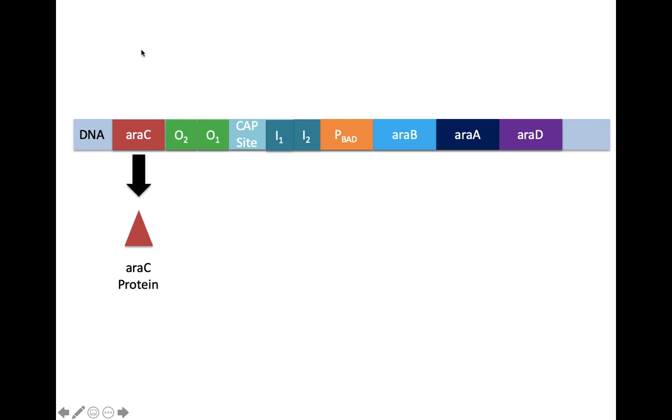Here, araC is seen in its monomeric form, but it is known to link together with other araC proteins to form an araC dimer.